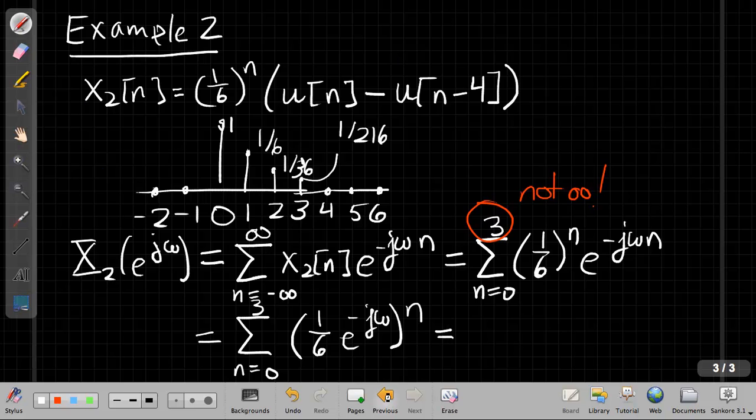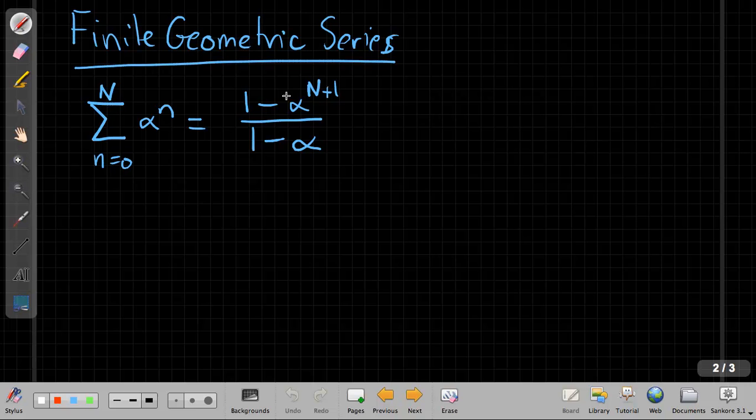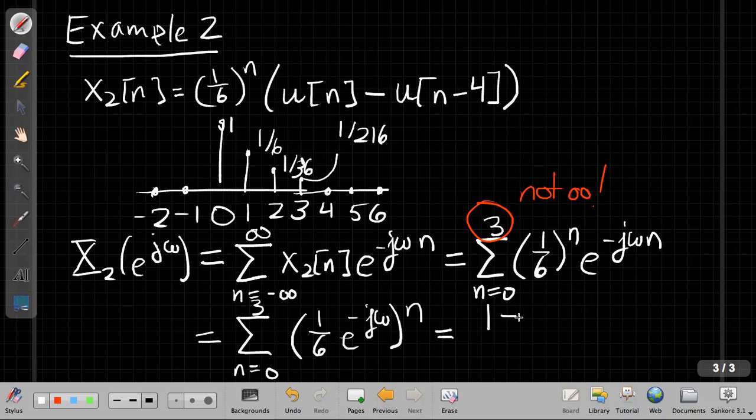And now if I just flashback to my page for a second, it looks just like this where now my upper limit is 3. So I'm going to have alpha to the 4 as this extra term in the numerator. So how that works out is I get 1 minus 1 sixth e to the minus j omega, the whole thing, this is my alpha to the 4th, all over 1 minus 1 sixth e to the minus j omega. And that's really all I can do with this one. I can't simplify it using some of the tricks we saw with rectangular pulses because it has not equal magnitude. So there's no point in taking this further. So that's my Fourier transform for this short finite length exponential pulse.